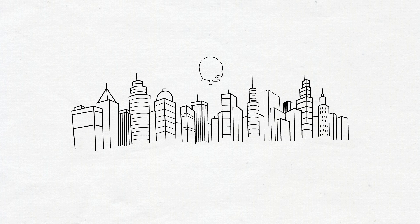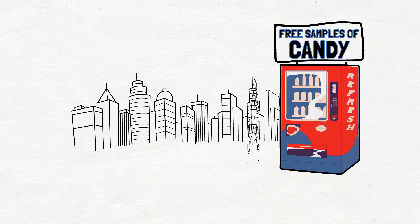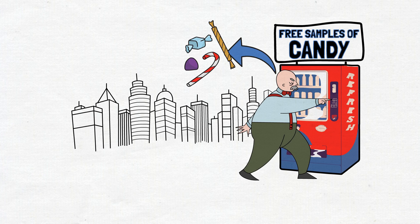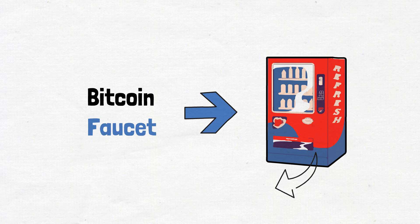Imagine that you're walking down the street and you stumble upon a vending machine that gives out free samples of candy. You press a button and it gives you a small piece of candy, just enough for a taste. Well, a Bitcoin faucet works a little like that vending machine. Instead of candy though, it gives out tiny fractions of BTC.